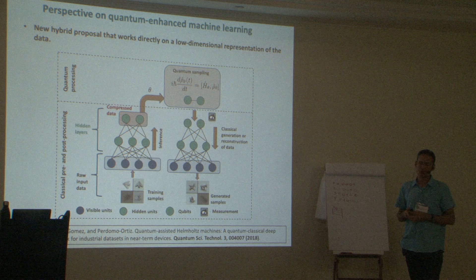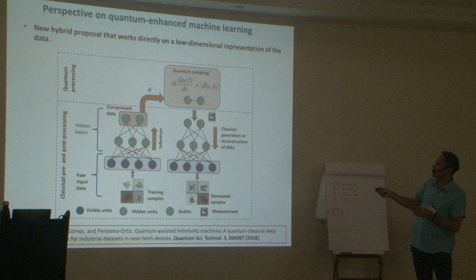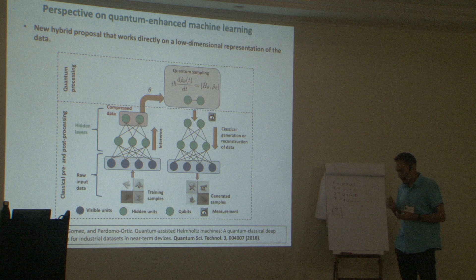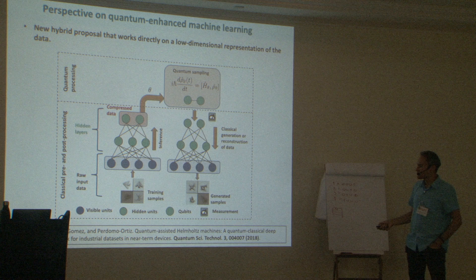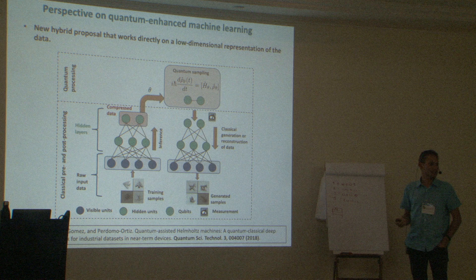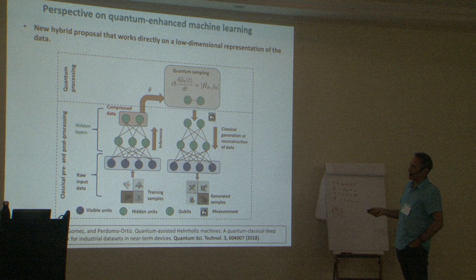What was tricky — and what took us several years to come up with the first proposal — is it's not easy to put a quantum computer in the loop and actually assist in the whole process. That was until Marcello found this paper on the Helmholtz machine — another model that they keep refining very slowly. Helmholtz machines are really the grandfathers of what is now called in machine learning the variational autoencoders, or the GANs.